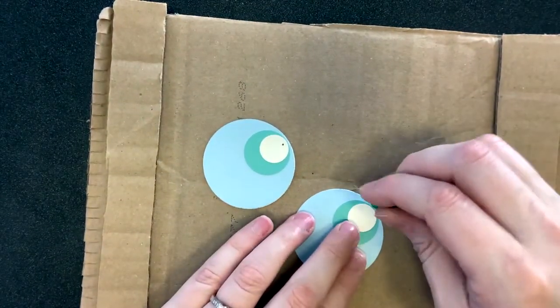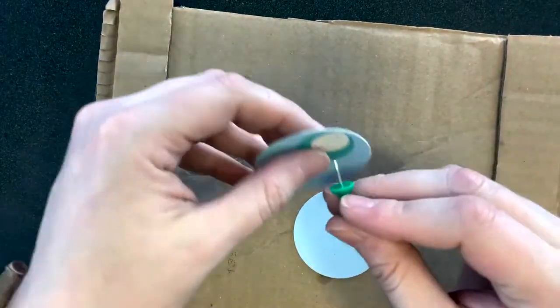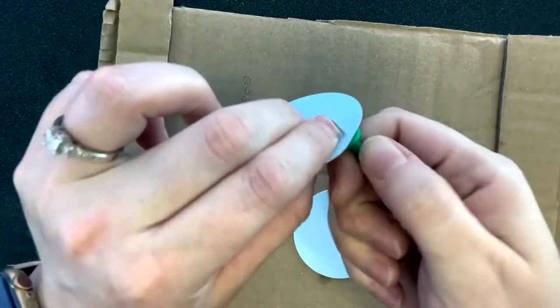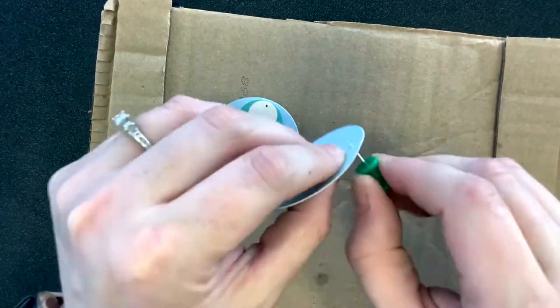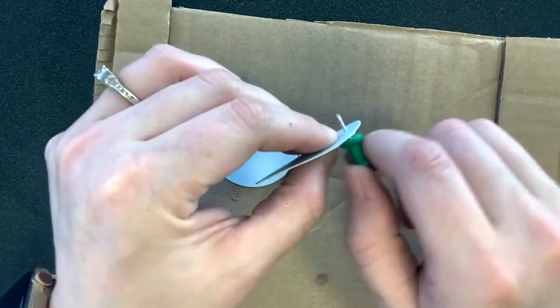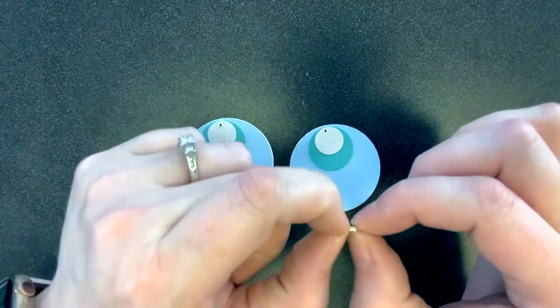Now place your circles on top of the cardboard and use the thumbtack to pierce small holes into the tops of the earrings where the hooks will go. Notice that I wiggle the thumbtack a bit to make sure that these small holes are big enough for the jump rings to pass through easily.